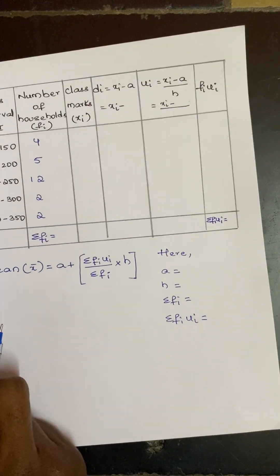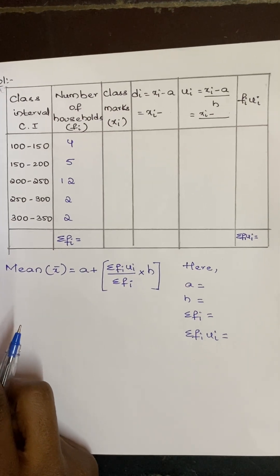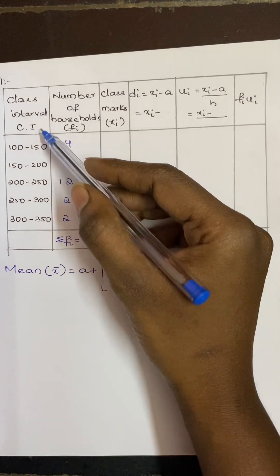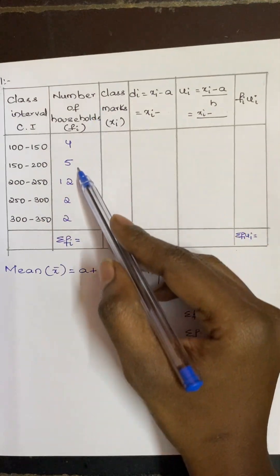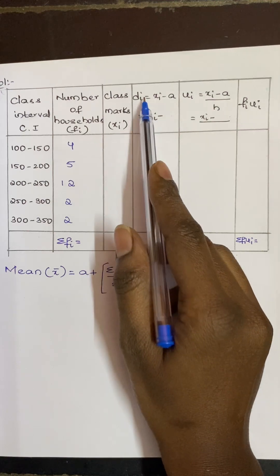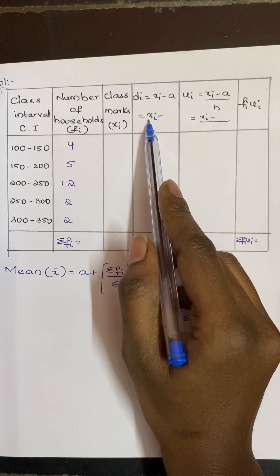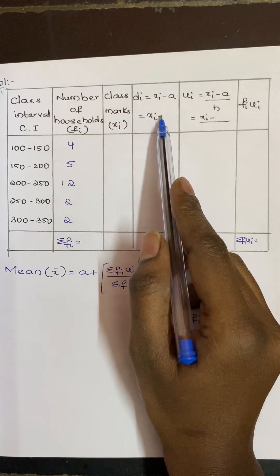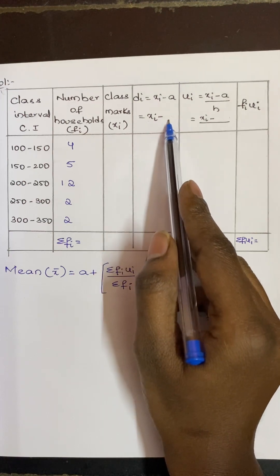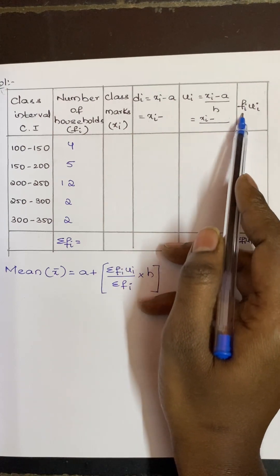So this is how the table to be drawn for finding the mean by using step deviation method. The first is class interval, the second is the number of households that is fi, the third is the class marks xi, then di = xi - a, ui = (xi - a)/h, and fi·ui.